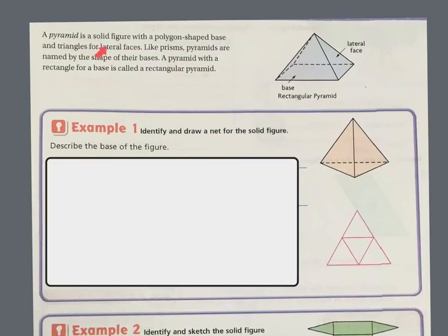A pyramid is a solid figure with a polygon-shaped base and triangles for lateral faces. Like prisms, pyramids are named for the shape of their bases. A pyramid with a rectangular base is called a rectangular pyramid. So this is the base of a rectangular pyramid, and then a base of an actual pyramid has the triangle shape.